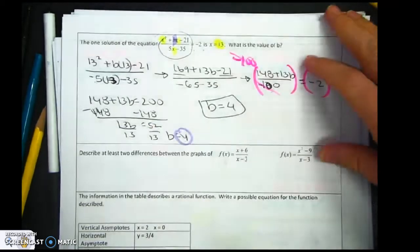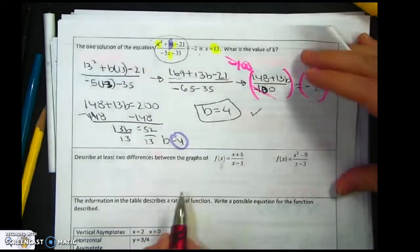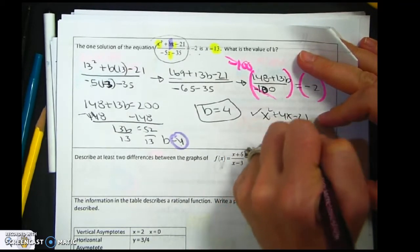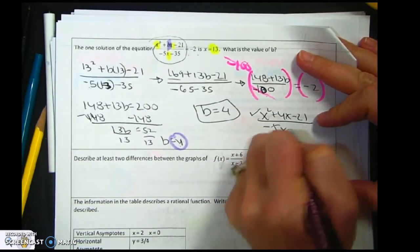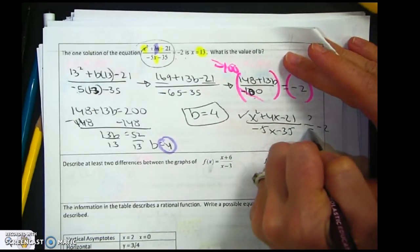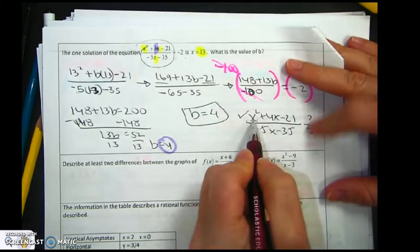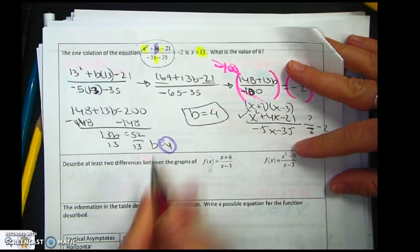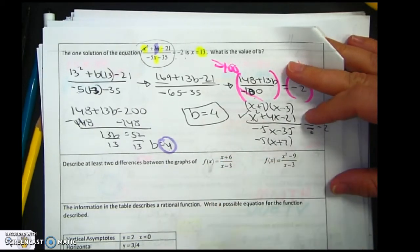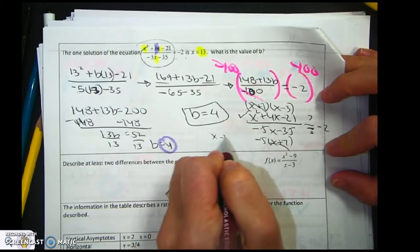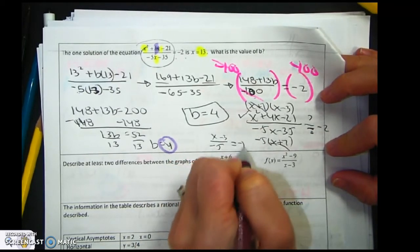Now, let's say I wanted to check it. Say I wanted to make sure I was actually right. I could actually plug it in. So I would go x squared plus 4x minus 21 over negative 5x minus 35. And I'm going to see if it equals negative 2. So I know I could factor this. This is if you want to check it.